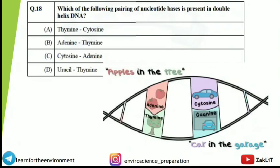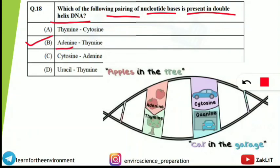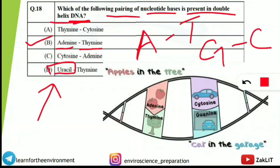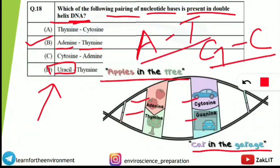The next question, from genetics, asks which nucleotide base pairing is present in double-helix DNA. The correct answer is adenine pairs with thymine (A–T) and guanine pairs with cytosine (G–C). Note that uracil is found in RNA, not DNA — in RNA, uracil substitutes for thymine. A helpful memory trick: 'Apples in the Tree' for A–T, and 'Car in the Garage' for C–G.